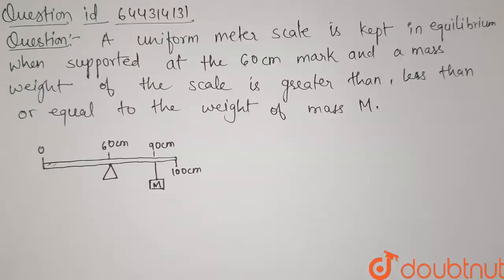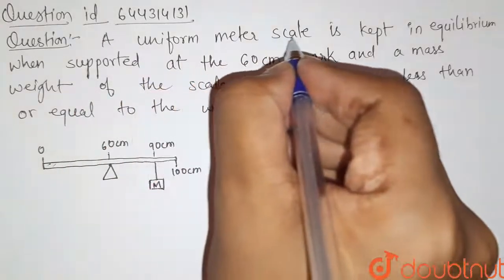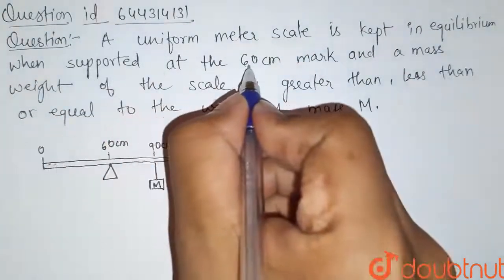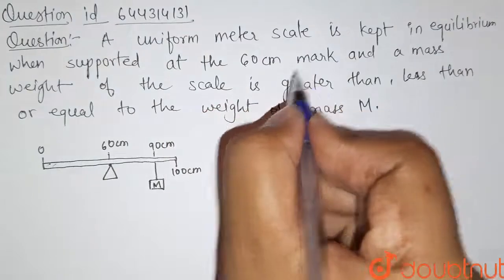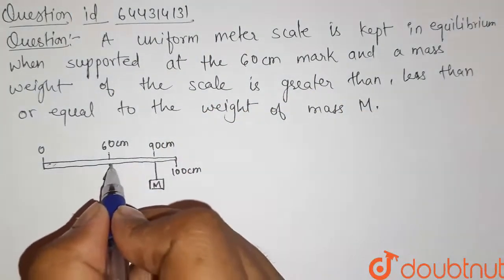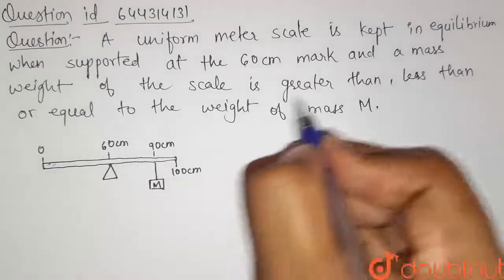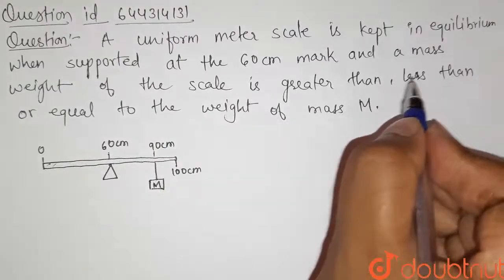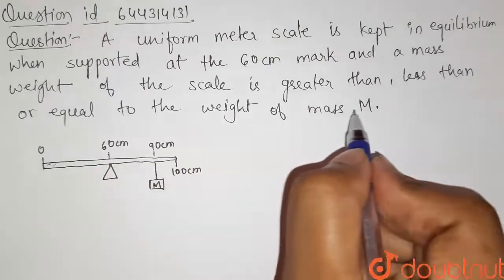Hello students. Here is our question. A uniform meter scale is kept in equilibrium when supported at the 60 cm mark. So this is our uniform meter rod and it is supported at this 60 cm mark. A weight of the scale is greater than, less than or equal to the weight of mass M.